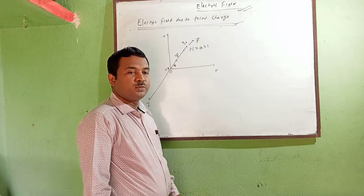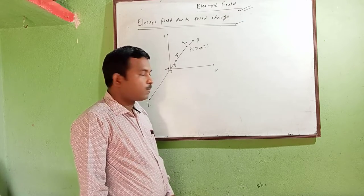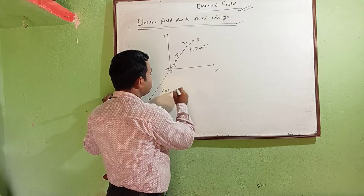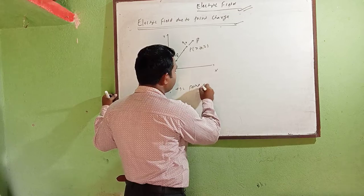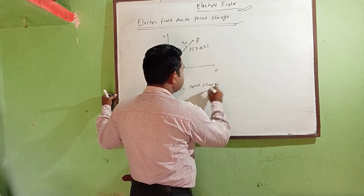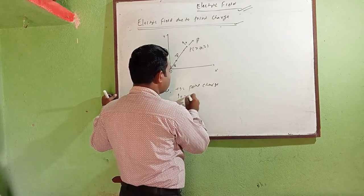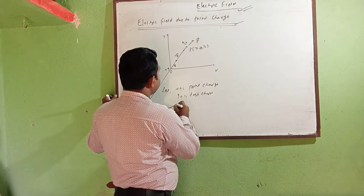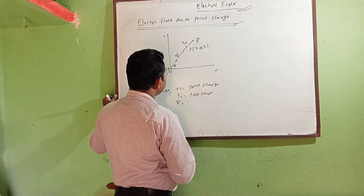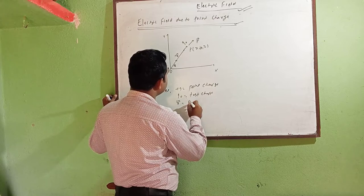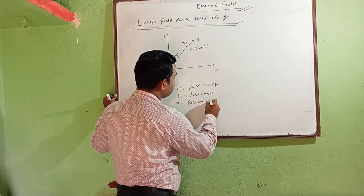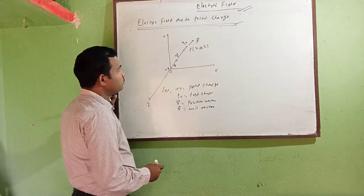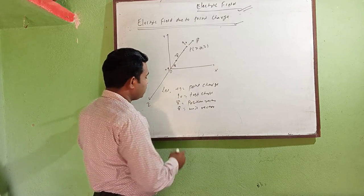We can find out the force experienced by this charge using Coulomb's law. Let us define: plus q equals the point charge, q₀ equals the test charge, and vector r equals the position vector.